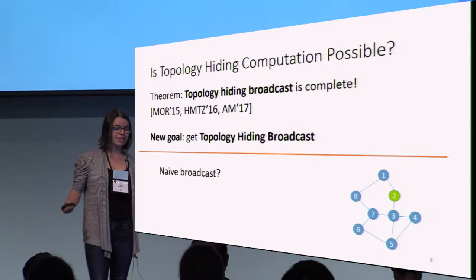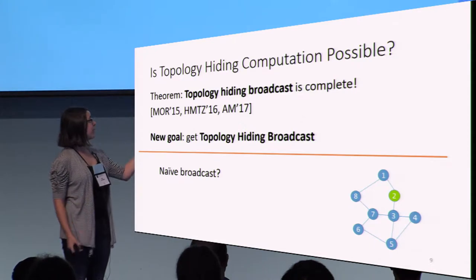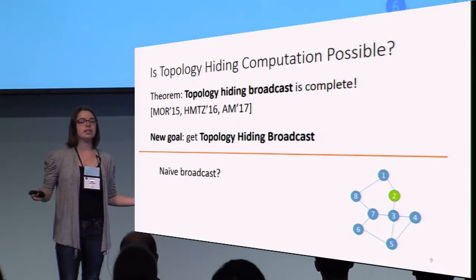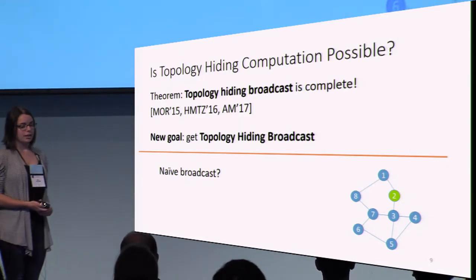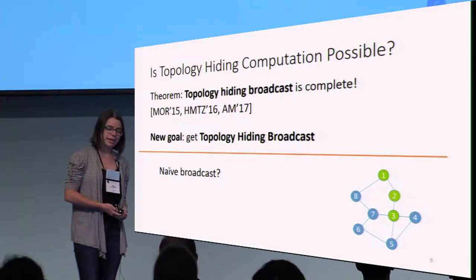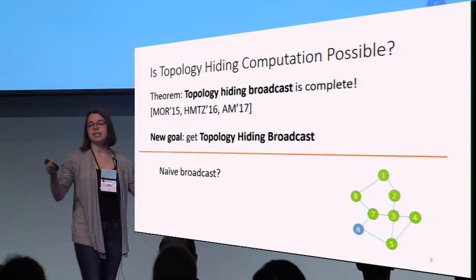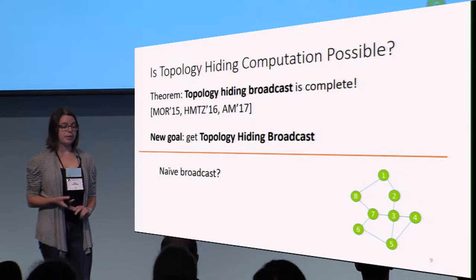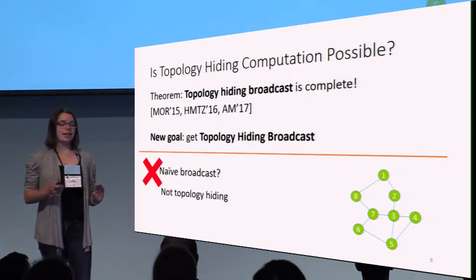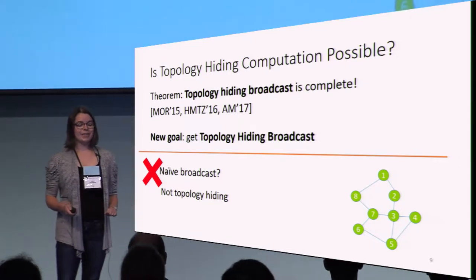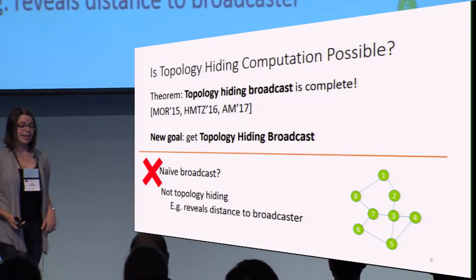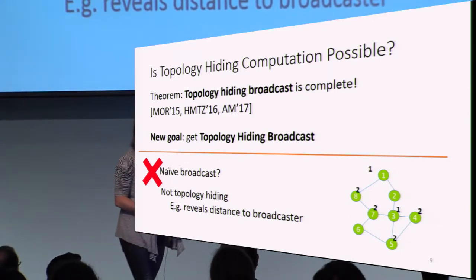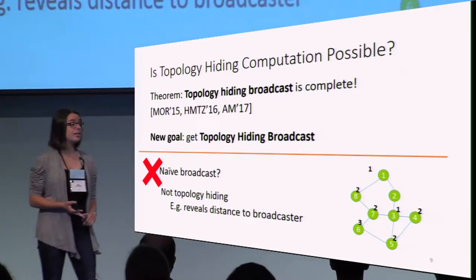Let's consider a naive broadcast to demonstrate this. We have a broadcast node — node 2 here — who's got a broadcast bit and wants to let everyone in the graph know the broadcast bit. In the first round, nodes 1 and 3 get the broadcast bit. In the next round, 1 and 3 send the bit to their neighbors. And then finally, node 6 gets the broadcast bit from her neighbors. This is not topology hiding, because it reveals the distance to the broadcaster. As soon as 1 and 3 get their message in the first round, they know they're distance 1 from the broadcaster, those nodes know their distance 2, and node 6 knows she's distance 3 away.